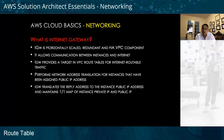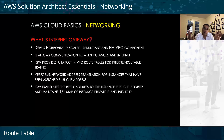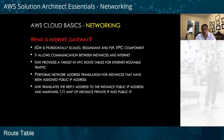What is an internet gateway? An internet gateway is a horizontally scaled, redundant, high-availability VPC component that allows communication between instances and the internet. Any traffic that comes in or needs to leave the EC2 instance within the EC2 environment requires an internet gateway.